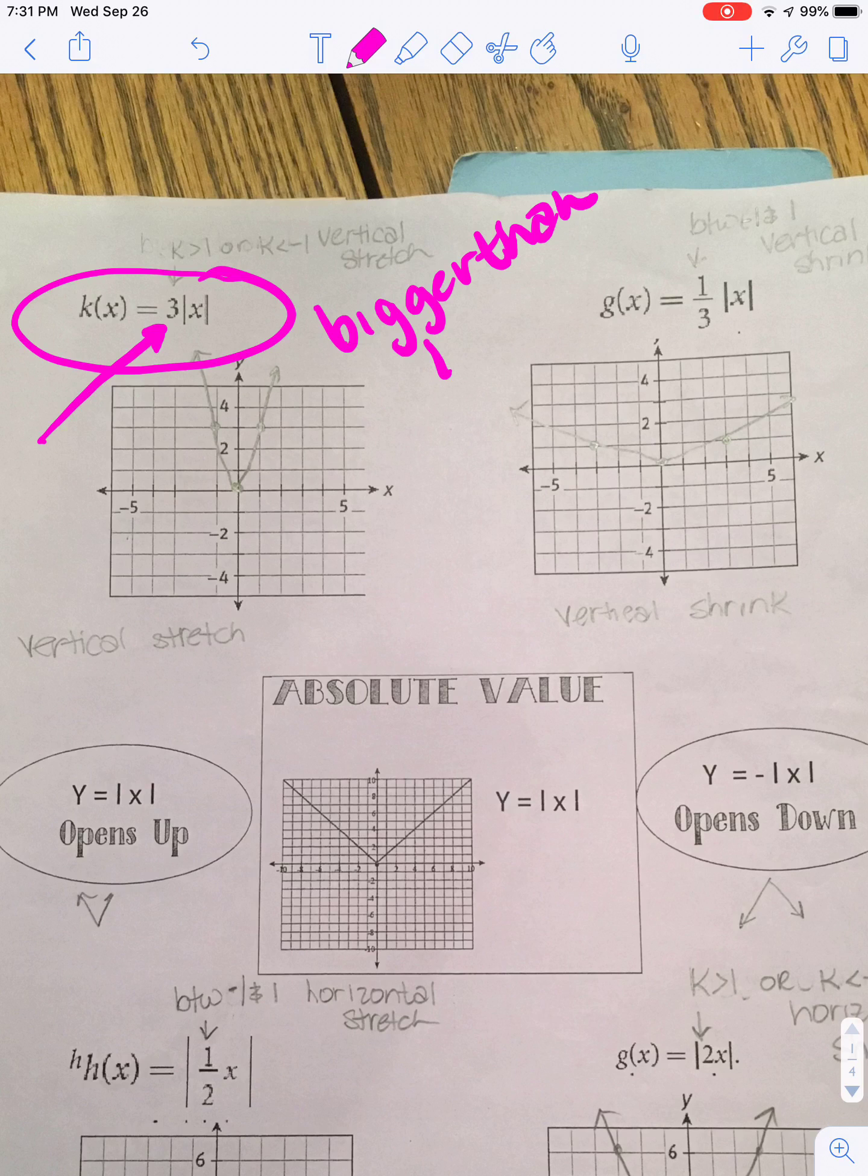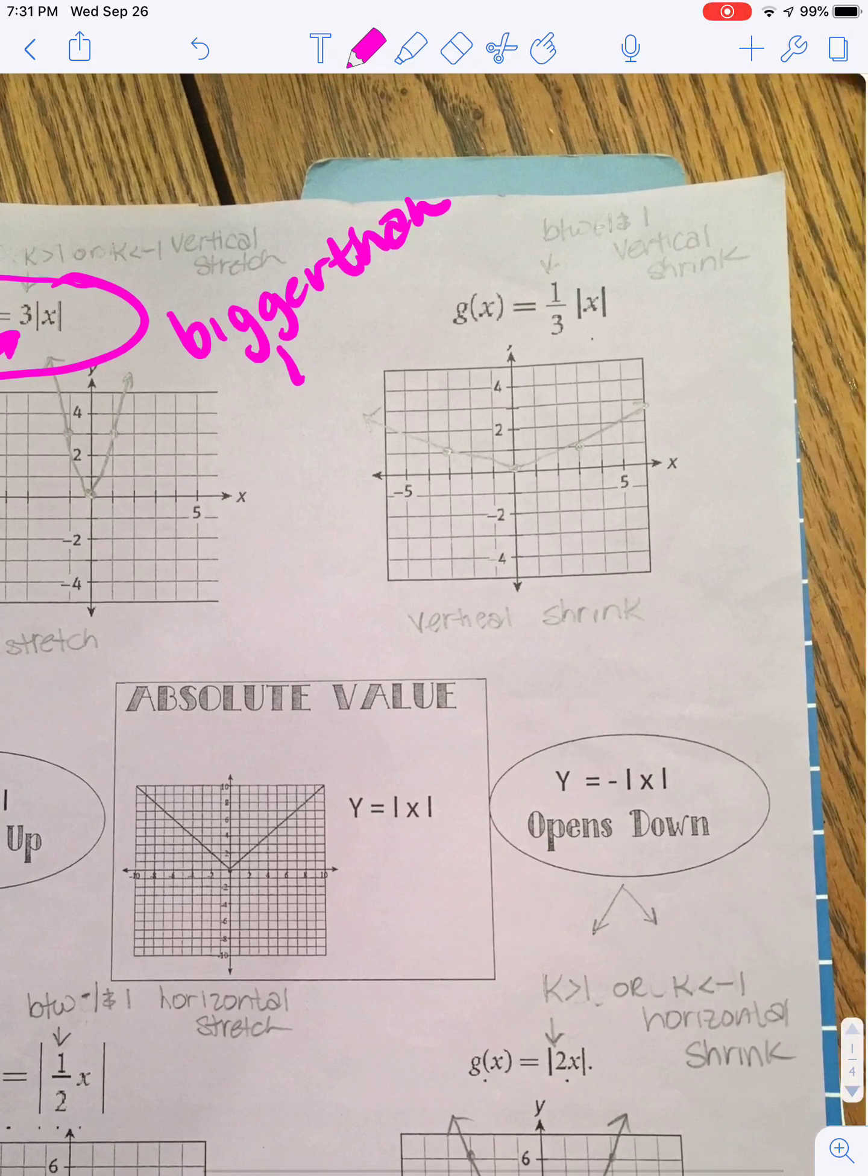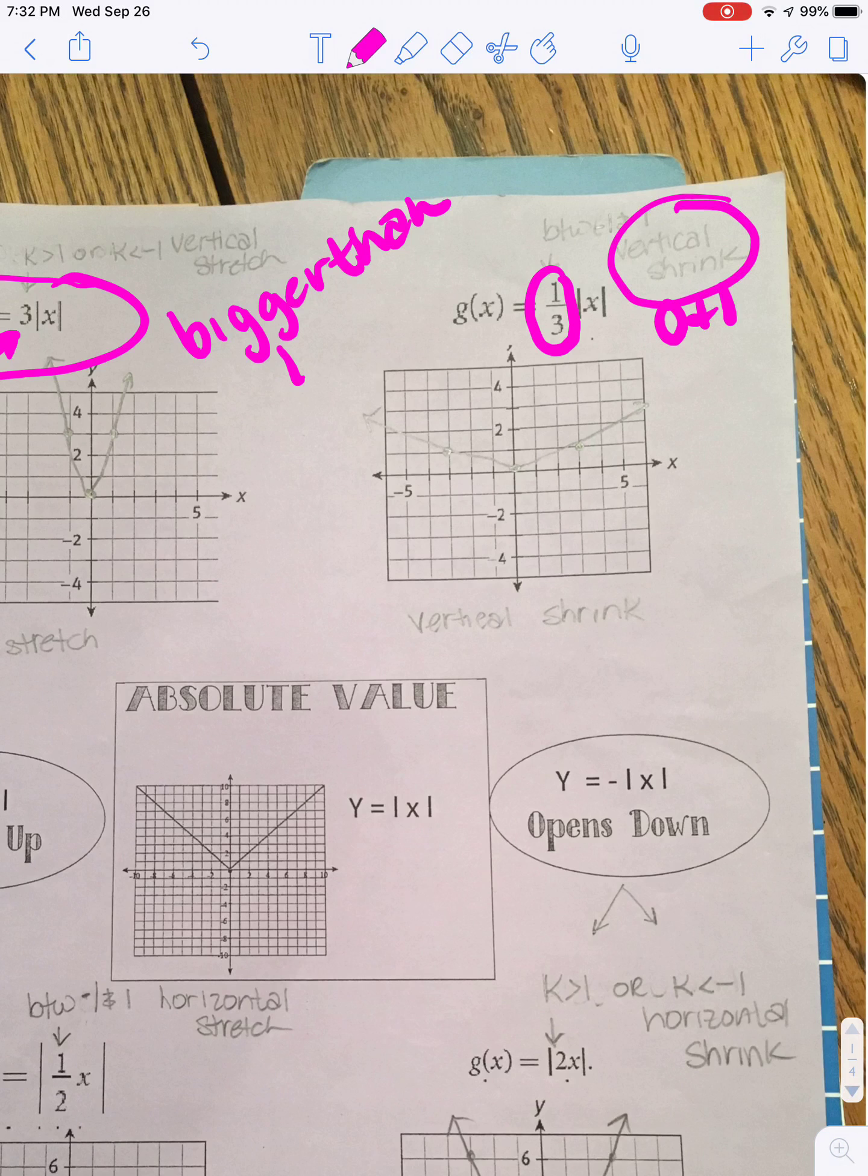We also said that if it had a number in the front, outside the absolute value, that was basically between 0 and 1, that it would have to be a vertical shrink. So those were two things that you needed to know.